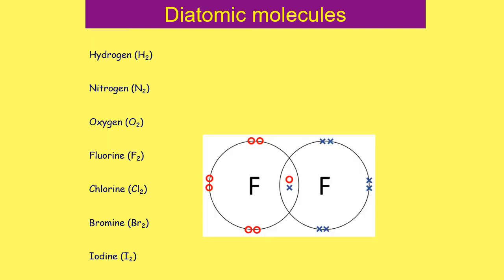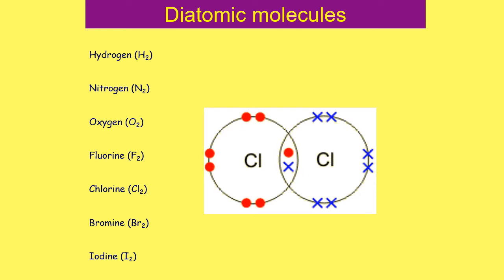Fluorine has seven electrons in its outer shell, so it only needs one more to be stable. Each fluorine shares one electron, bringing the total to eight — so there is only one covalent bond in F₂. Chlorine is another halogen with seven electrons in its outer shell, and it does exactly the same: each chlorine shares one electron, giving each chlorine eight electrons and forming one covalent bond.